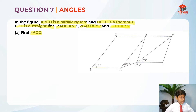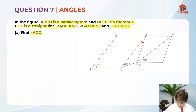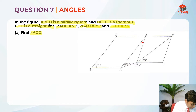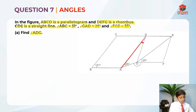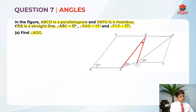So where is angle ADG? It is over here — A, D, and then G. So here is the line, and this is the angle ADG.